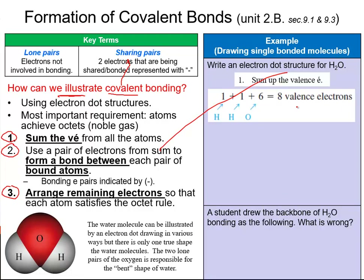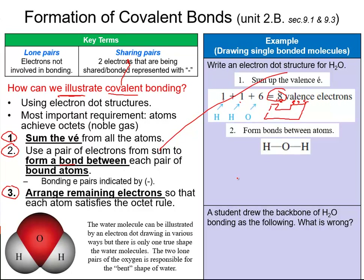When you want to draw the electron dot structure for water, you first sum up the valence electrons. From the periodic table, using the group numbers, we find that hydrogen has one valence electron and oxygen has six, giving a total of eight valence electrons. Now that we have eight valence electrons, our next step is to form a bond between the atoms.